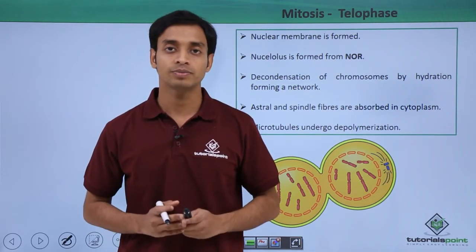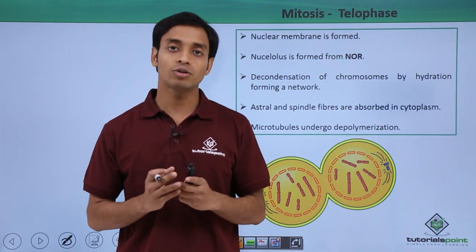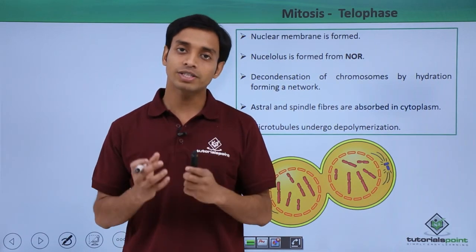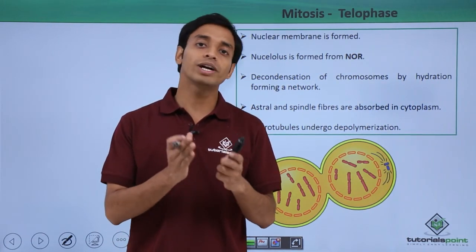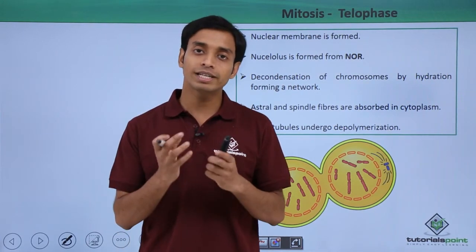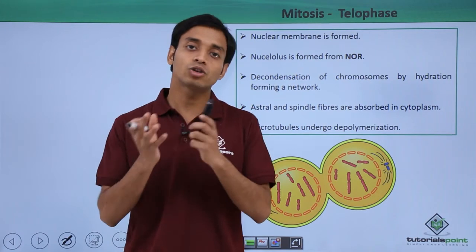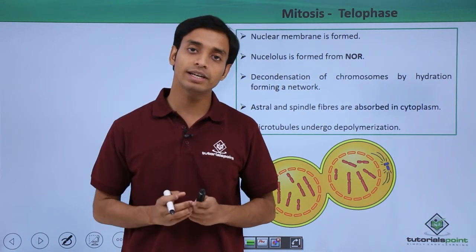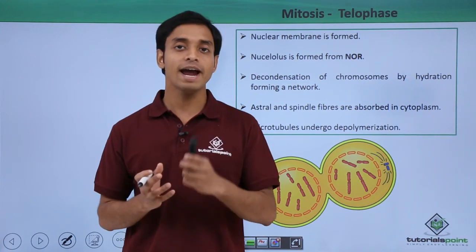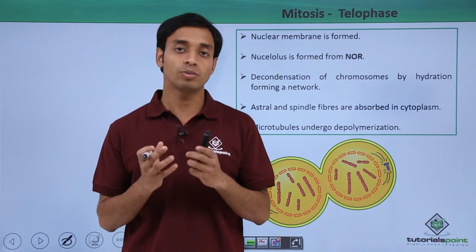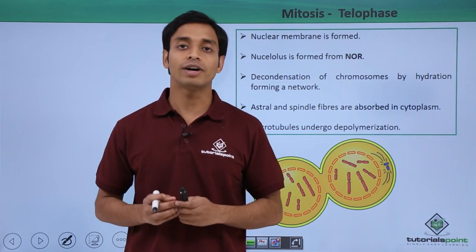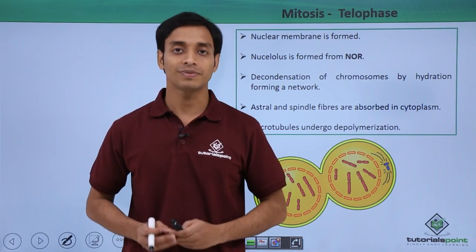So in this video we have talked about the fourth stage of karyokinesis, which is telophase — a phase quite reverse to prophase. Here the chromosomes start becoming chromatin network again, the nucleolus and nuclear membrane start reappearing, and the spindle fibers dissolve. I hope you have understood and liked this video. Thank you.